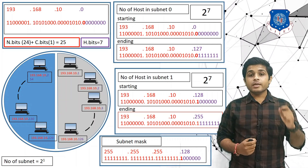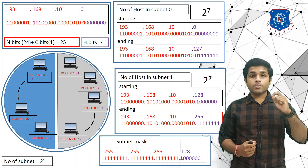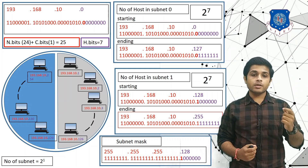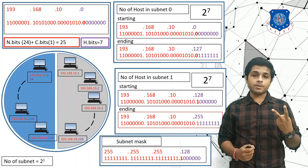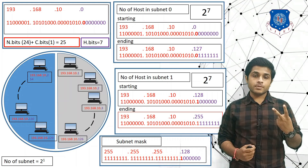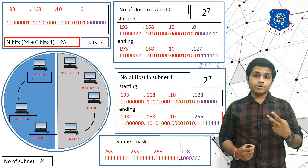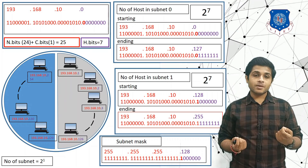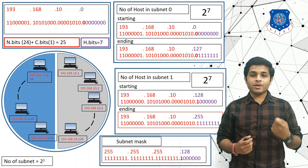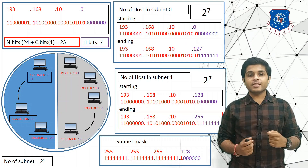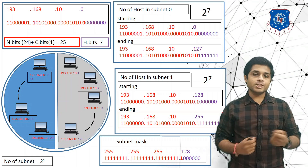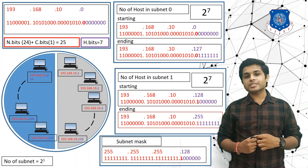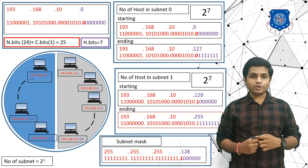So converting 1 bit from host to network gives us 2 subnets. Converting 2 bits will give us more subnets — that will be covered in the next lecture. If you have any doubts, you can ask in the comment section. Thank you so much.